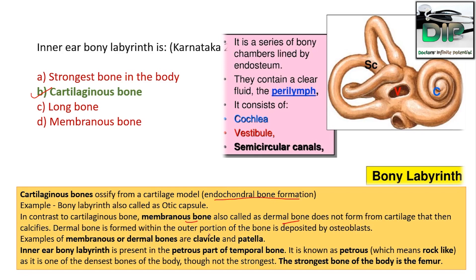The dermal bone is formed within the outer portion of the bone and is deposited by osteoblasts. Examples of membranous or dermal bones are clavicle and patella — they don't form cartilage but calcify on the outer portion deposited by osteoblasts. The inner ear bony labyrinth is present in the petrous part of the temporal bone. Petrous means rock-like, as it is one of the densest bones of the body, but not the strongest — the strongest bone is the femur.